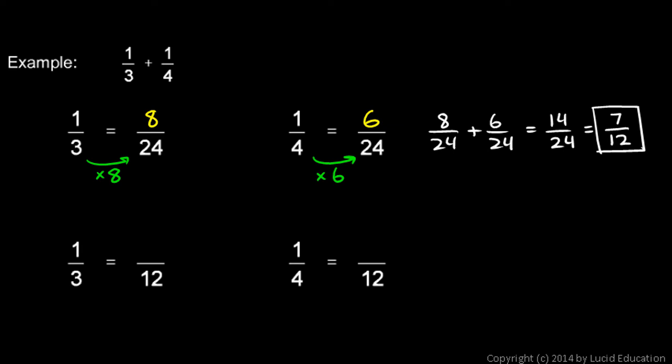I'll rewrite 1 3rd as an equivalent fraction with a denominator of 12, and the same thing with 1 4th. Rewrite it with a denominator of 12. So 3 times what is 12? 3 times 4. So I have to multiply the 1 times 4, and 1 times 4 is just 4.